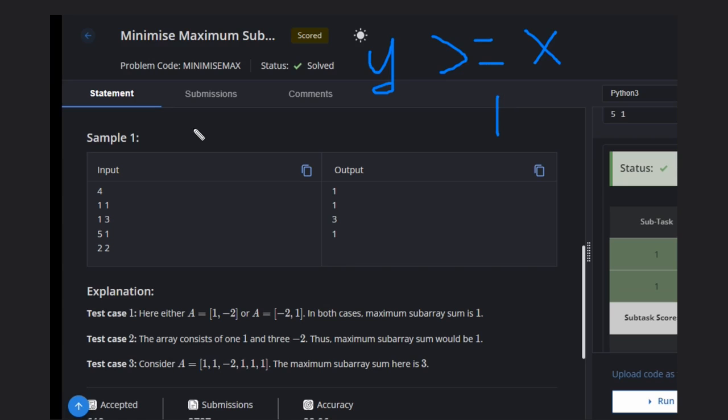Why 1? Because if there are more number of -2, we can insert between 1s. That means we can't get the maximum subarray sum more than 1. It is not possible. That's why if number of -2 is greater than equal to x, our answer will be 1. That is for sure.